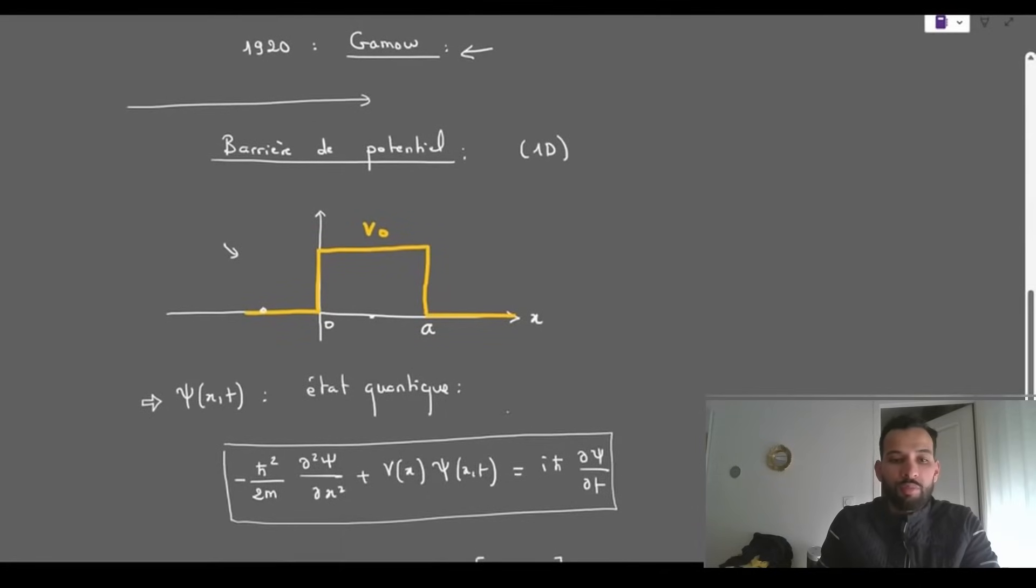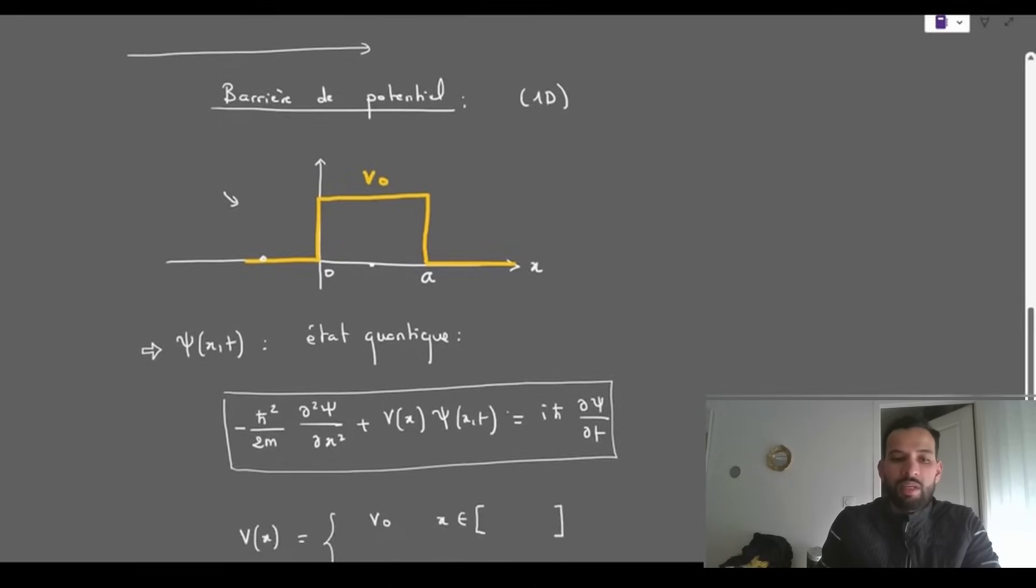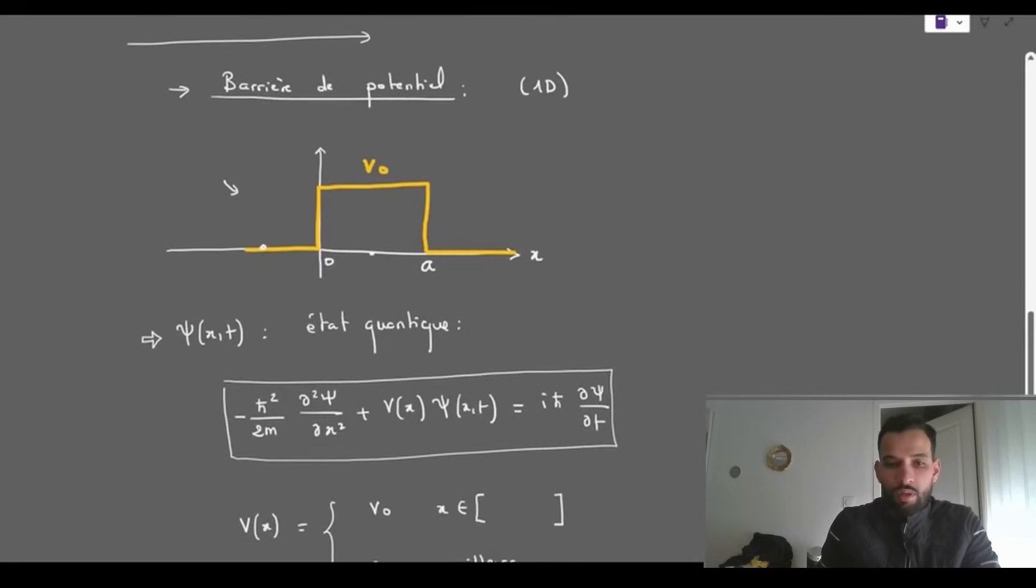Then, we will apply this formalism to the case of a heavy nucleus by modeling the Coulomb potential barrier and following Gamow's method to deduce the transmission probability. We will start with the first part, potential barrier.